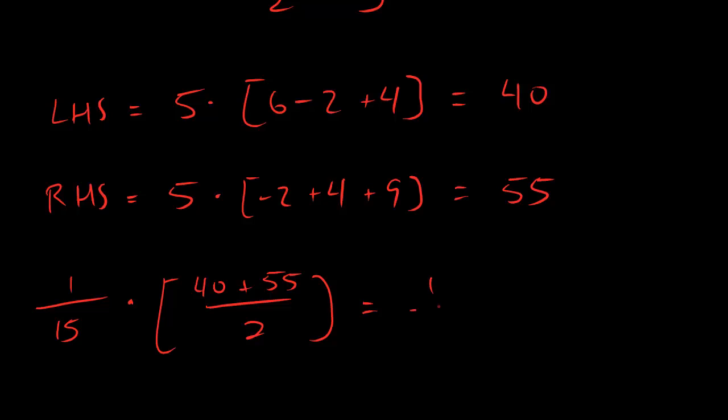Let's simplify that out. We still have 1 over 15. 40 plus 55 is 95 divided by 2. And then, dudes, this is just a fraction. This should end up being 95 over 30. And you can simplify that if you want to. But guess what? I don't want to. So, I'm going to leave it like that.